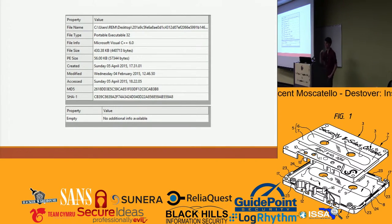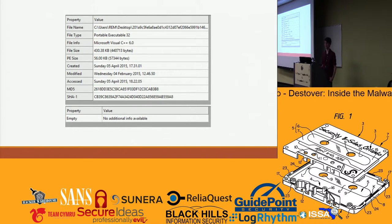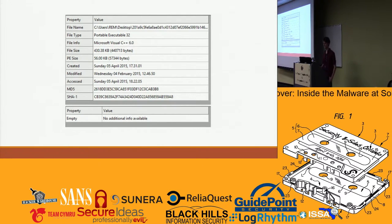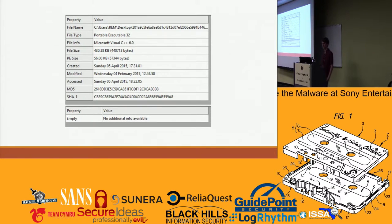The way I used CFF Explorer for the Sony malware sample was to get a general overview — you get the hashes and some more information about the executable. For example, it was compiled using the Microsoft Visual C++ Compiler. Another suspicious thing: the portable executable size was 56 kilobytes, but the file size was 430.38 kilobytes, so not all of this was part of the executable.